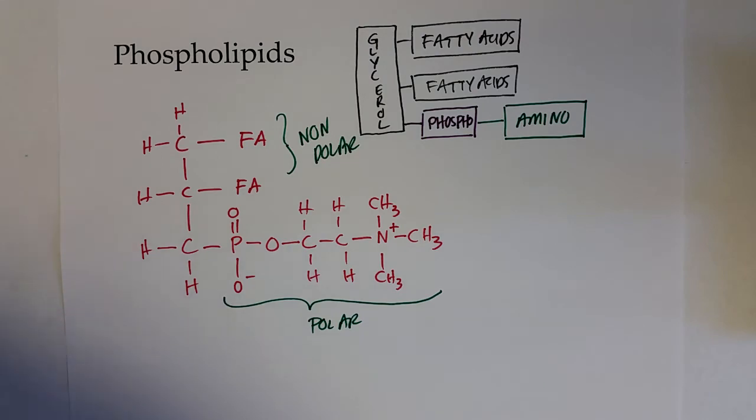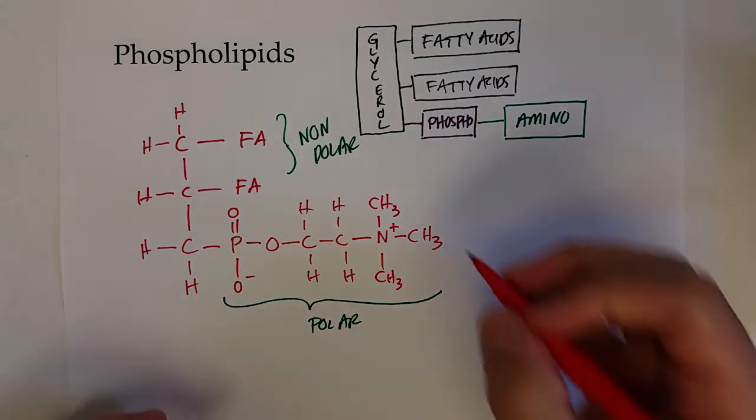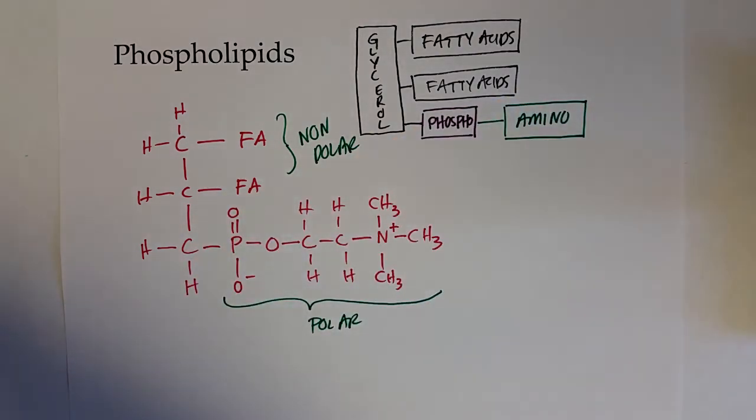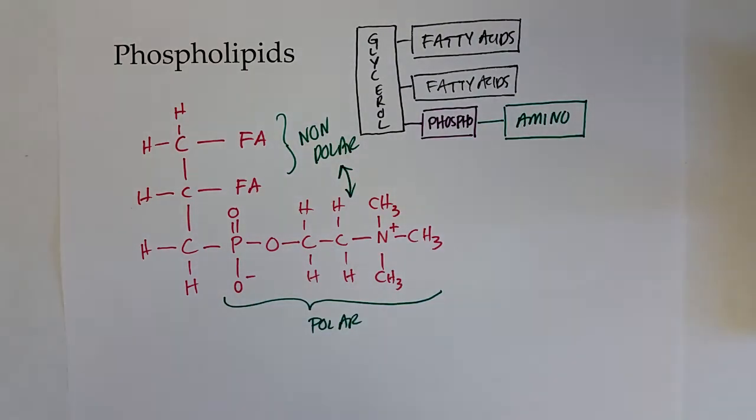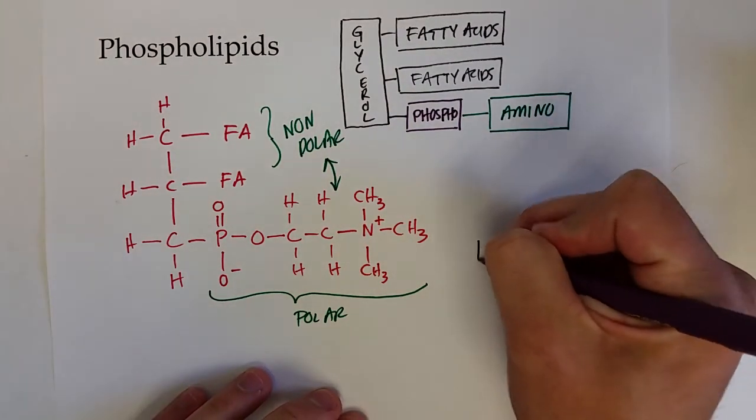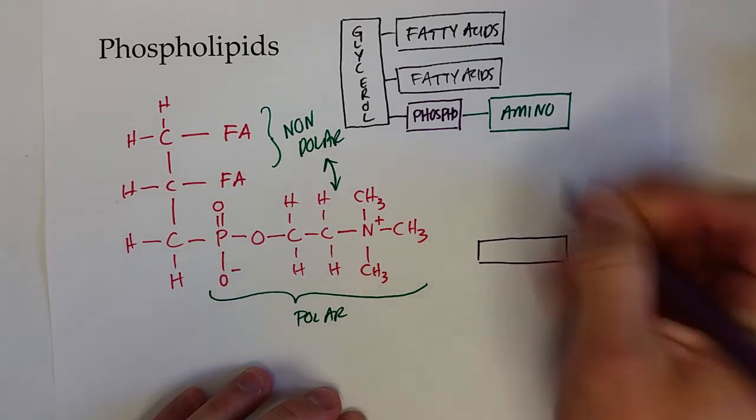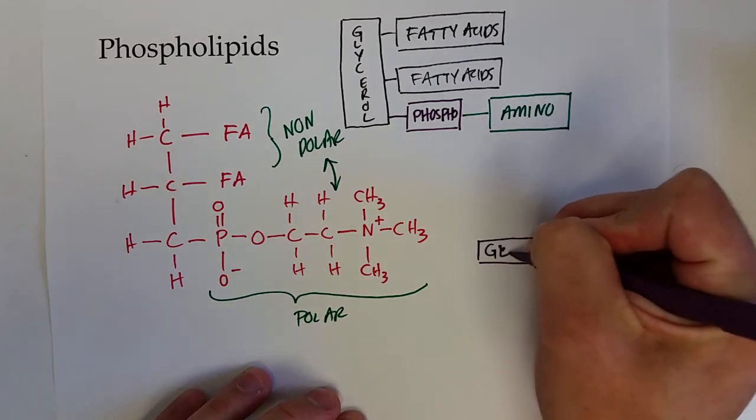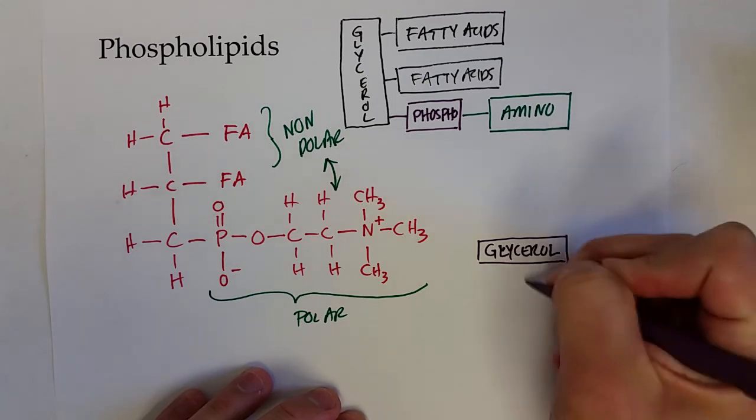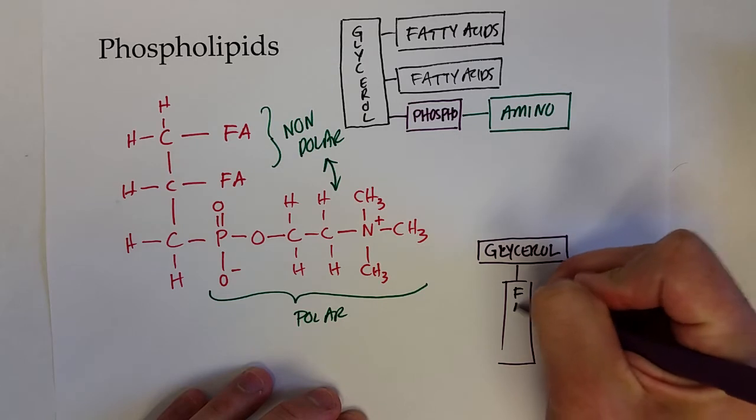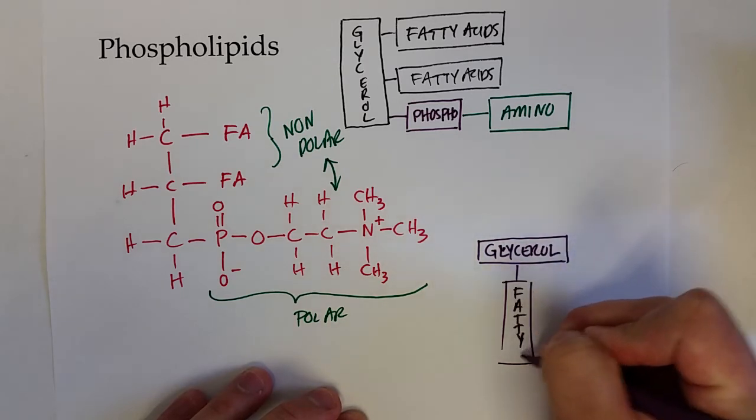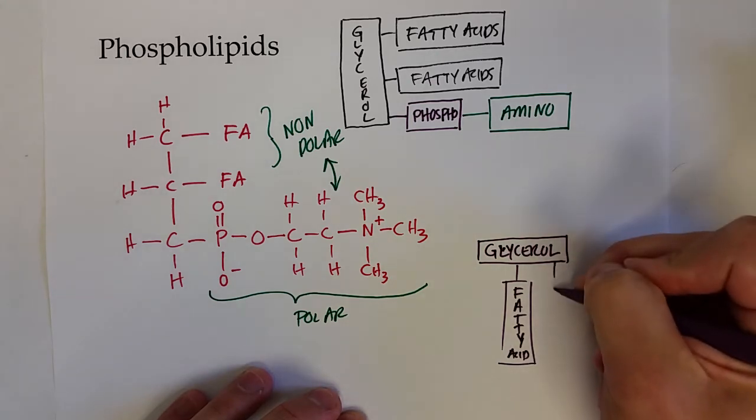And so how this molecule orientates itself is that the phosphogroup and the amine, the polar head group, actually separates from the nonpolar region of the phospholipid and sets up a molecule that usually is drawn like this, where we'll have the glycerol portion here and then we have our two fatty acid, often called tails, connected to it.